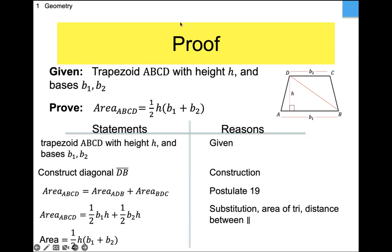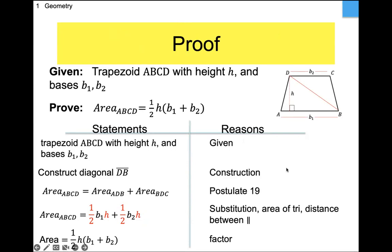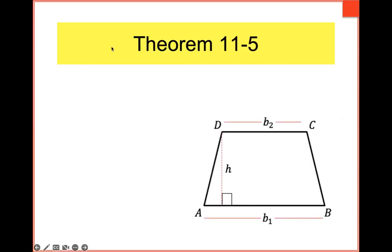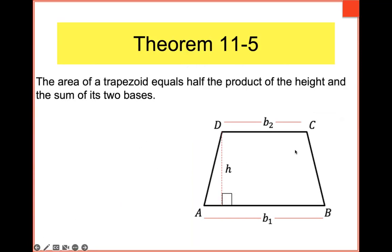The area of the trapezoid — broken into two triangles — is one-half times base one times h, plus one-half times base two times h. Notice both terms have a one-half and an h in them. So I can factor out one-half times h, and I'm left with the formula we wanted from the start: the area of a trapezoid equals one-half times h times the quantity (base one plus base two). That is Theorem 11.5.